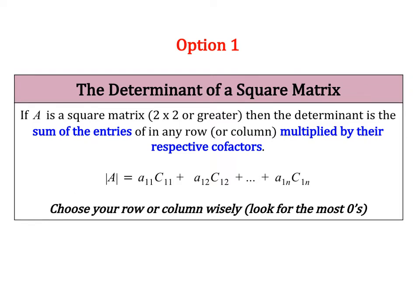To find the determinant of a larger square matrix — and it also works for a 2x2, though we already have a nice formula for that — we have a new formula. You pick any single row or column of your matrix, and you find the determinant by taking the sum of all your entries multiplied by their respective cofactors. When doing this method, it's really important that you choose your row or column wisely. If there are a lot of zeros, your element is zero, meaning you don't even need to find that cofactor — so it will save you a lot of time.